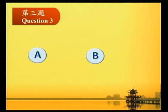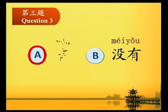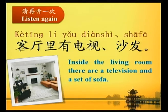第三題 (Question 3): 客廳裡有電視嗎? (Is there a television in the living room?) A. 有。B. 沒有。答案是 A. 有。Please listen again: 客廳裡有電視、沙發。Inside the living room, there are a television and a set of sofa.